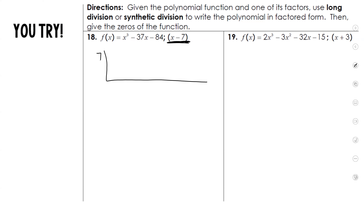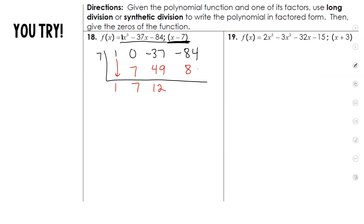Now we're going to put the coefficients here. The first coefficient is 1. We're missing an x squared term, so we put a 0 in its spot. Next coefficient is negative 37. The constant is negative 84. Bring down the 1 and multiply: 7 times 1 is 7. 0 plus 7 is 7. 7 times 7 is 49. Add these together to get 12. 7 times 12 is 84. Negative 84 plus 84 is 0. You always want to end with 0 as your remainder.